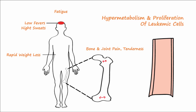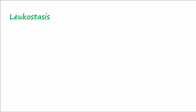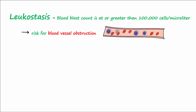Eventually, the leukemic blast cells — these immature precursor cells that are normally never outside the bone marrow — leak into the blood circulation, causing increased blood viscosity. Leukostasis occurs when the blast count in the blood is at or greater than 100,000 cells per microliter. At this point, the blood can become dangerously viscous or thick, slowing circulation throughout the body and increasing the risk for obstruction of blood vessels.